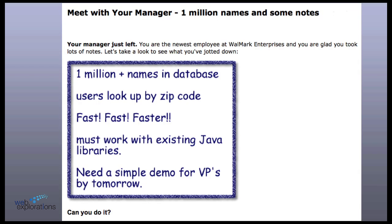So here's what the situation is. You just had a meeting with your manager. And she has a million names and some notes. And here's what your notes look like. She has a million names in a database, or a million plus names. And the higher-ups management wants to be able to have a program that users can look up by zip code. They want it to move very fast. So that's one of the main prerequisites.